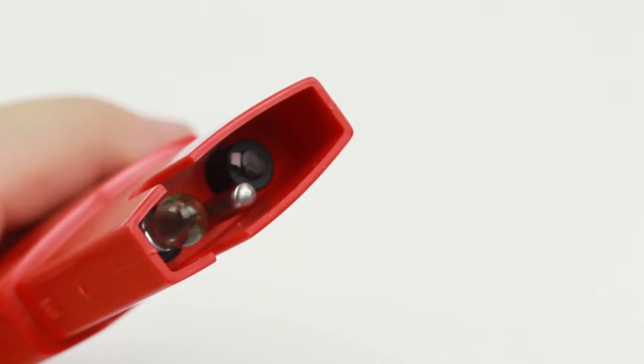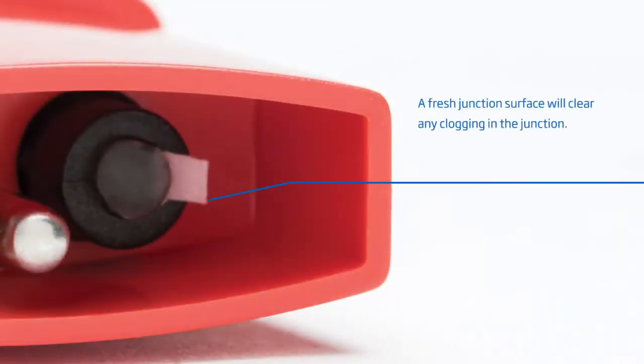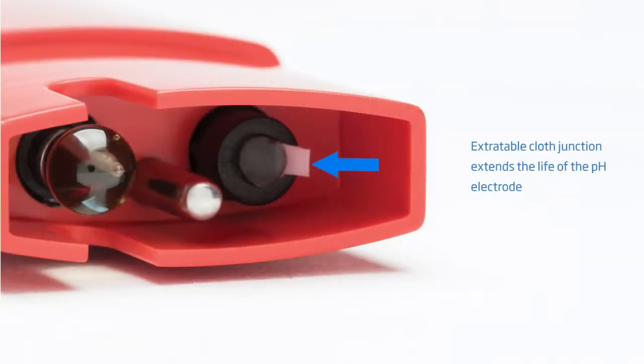Looking at the sensor portion of the meter, the pH electrode, temperature probe, and cloth reference junction can be seen. The cloth reference junction is extractable. When there is a stability issue with the readings, the junction is pulled one-eighth of an inch from the meter to expose a fresh surface. The extractable cloth junction offers a great benefit in extending the life of the pH electrode.